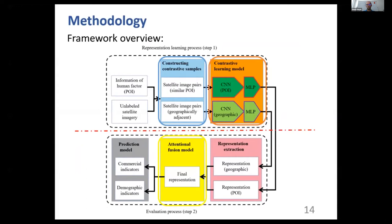Specifically, we first construct contrastive samples for satellite images with similar POI distribution and for geographically adjacent images. Then we design a contrastive learning model to extract the informative representation from the satellite image. In order to adaptively combine the representation from two different perspectives, we propose an attentional fusion model in the evaluation process.